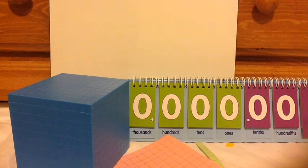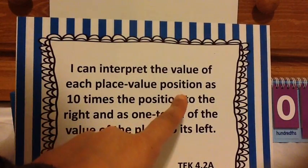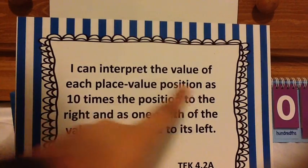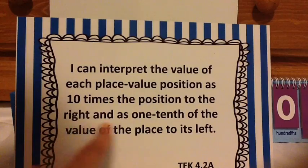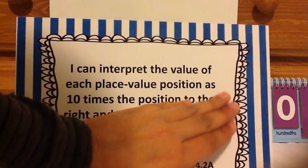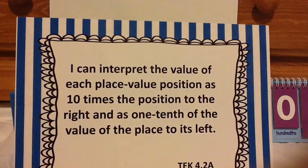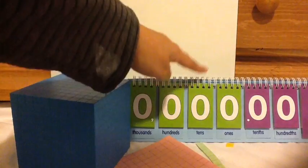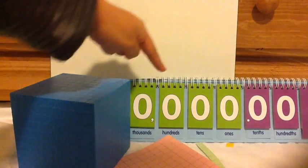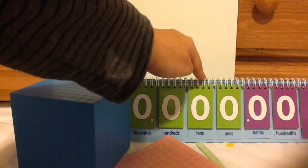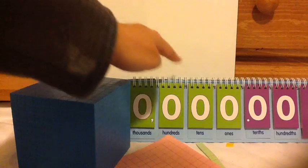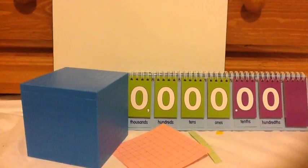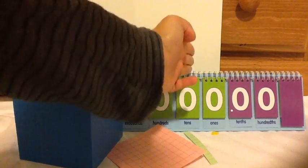Essentially what I want to help you understand is that each place value position is 10 times to the right and one-tenth to the left. Let's ignore the one-tenth right now and just focus on 10 times to the right. Each place value position is 10 times the position to the right. So looking at this, we're saying this position is 10 times the value of the one on the right, and this is 10 times the value of what's on the right.